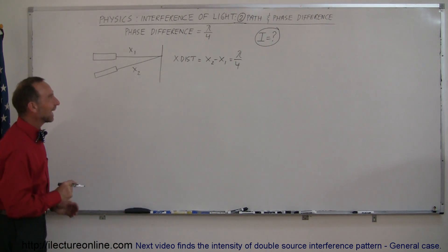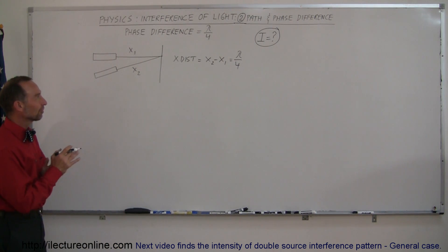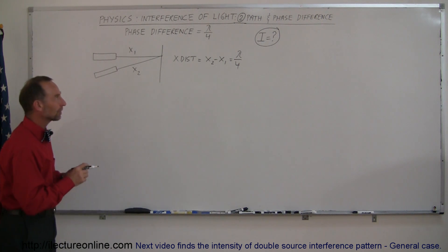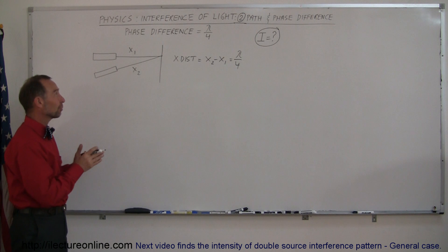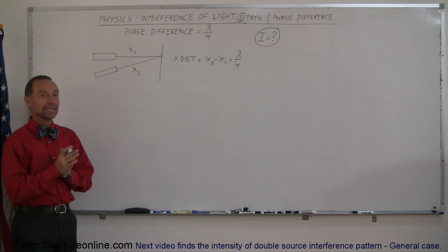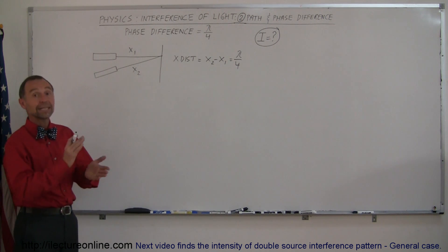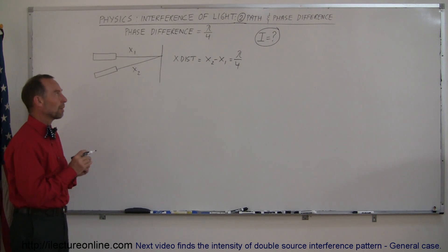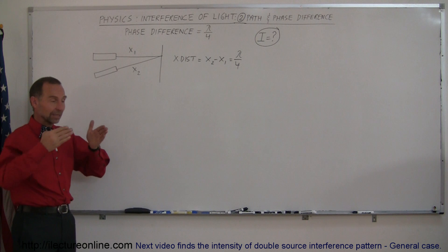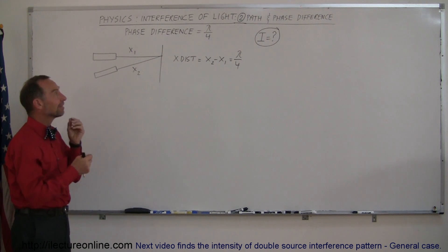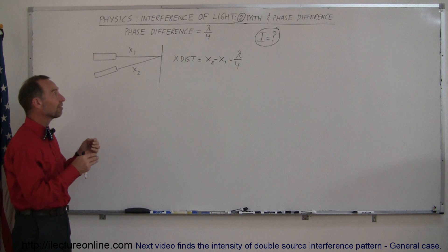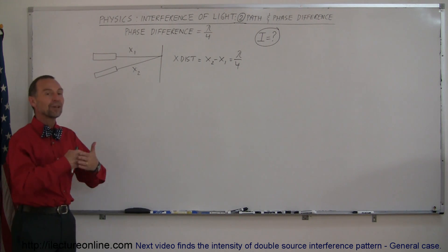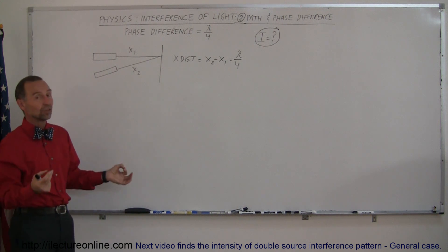Welcome to iLectureOnline and the next section on interference of light. We're going to look at a more special case of what we looked at before. Before, we looked at a path length difference between two beams of light that were either completely out of phase — 180 degrees out of phase or half a wavelength — or completely in phase. When two beams come together completely in phase, the intensity is four times the intensity of either beam on its own; if they're completely out of phase, the intensity is zero.